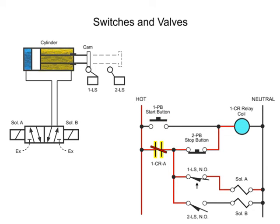When contacts 1CRA are closed, electrical power is distributed to the rest of the circuit. Since limit switch 1LS is held closed by the cam prior to the beginning of the cycle, current flows through this switch and activates solenoid A.